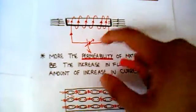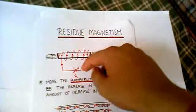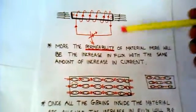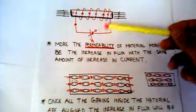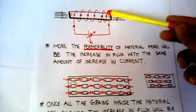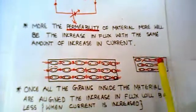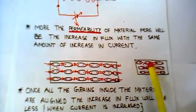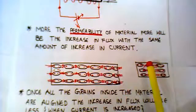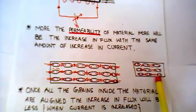What will happen if I increase the value of this voltage source? That means if I increase the value of this voltage source, what will happen to the flux? If you analyze this core material under a microscope, you will see there are thousands of grains, and these individual grains act as a small magnet.